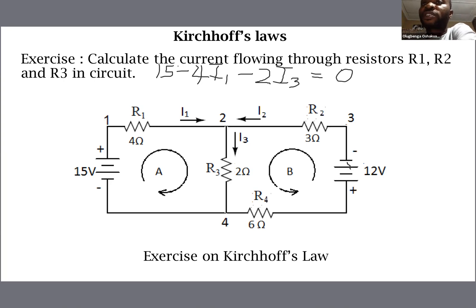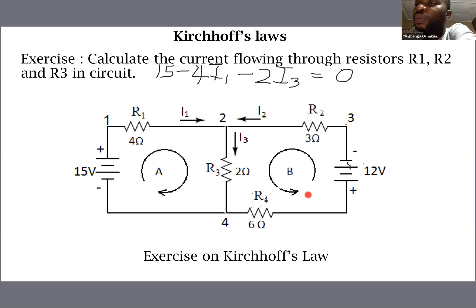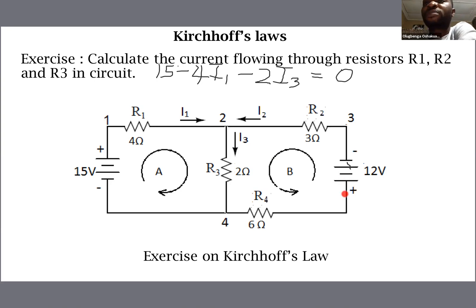Moving to the next loop, we are navigating in the anticlockwise direction, starting from the battery. We expect current to flow out of the battery in the clockwise direction, but since we are navigating anticlockwise — which agrees with the expected current direction — we start by writing minus 12 volts.